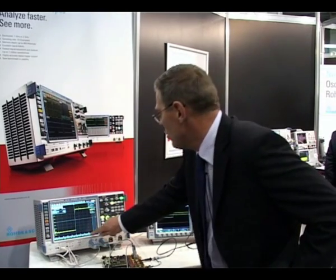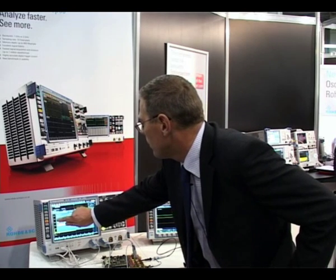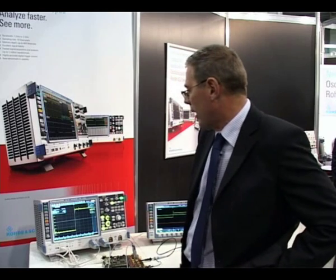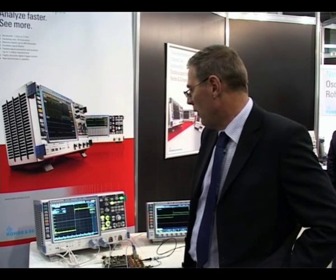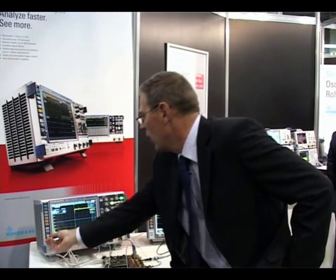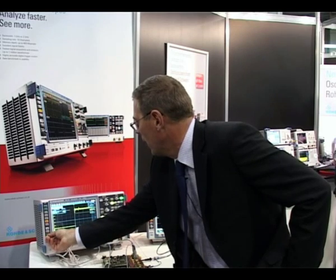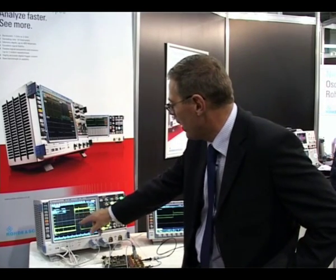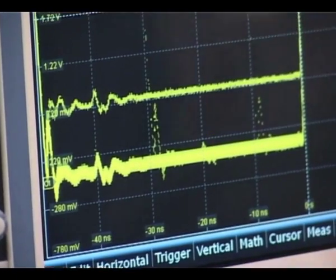So if we change the display to infinite persistence we can now get a visualization of these errors as and when they occur. I'll just increase the intensity up there so we can see that the very fast update rate of the scope is allowing us to see that there are very infrequent transients on the signal there.